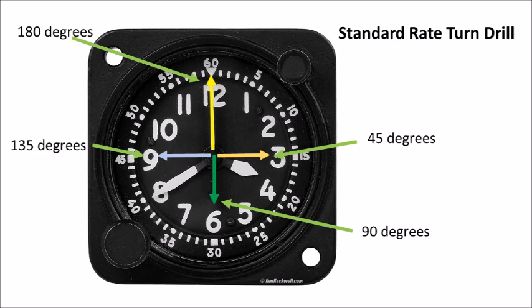Here is an annotated clock showing you the checkpoints. At 15 seconds into the drill you should be 45 degrees into the turn; similarly at 30 seconds you should be 90 degrees, and 180 degrees after a full minute. This drill is quite useful and I extend the idea throughout the basic instrument training phase.